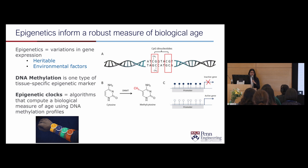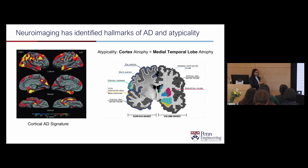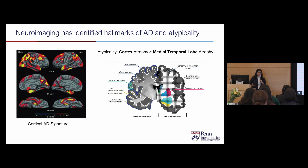In terms of imaging, we've identified some of the hallmarks of AD and of atypicality. On the left-hand side you see the signature of Alzheimer's disease in the brain — where we're seeing the greatest atrophy or degeneration of brain cells. On the right-hand side is a depiction of how we turn that into data. You can take an MRI of the brain and extract features such as volume or cortical thickness, and use those numerically derived features in our models.